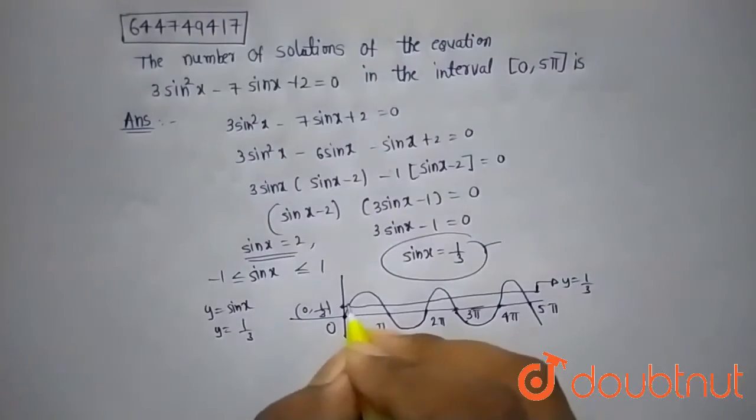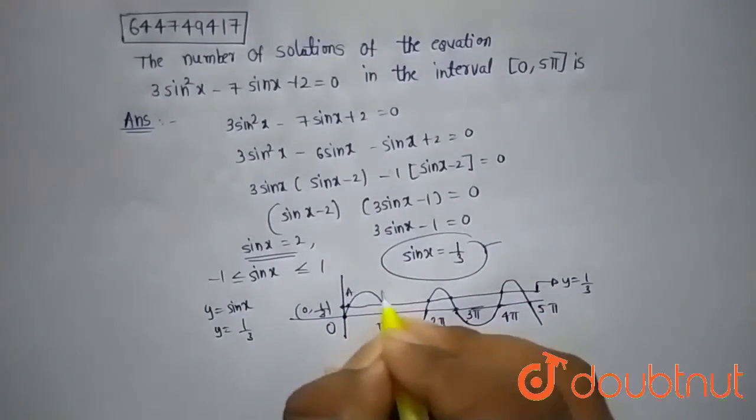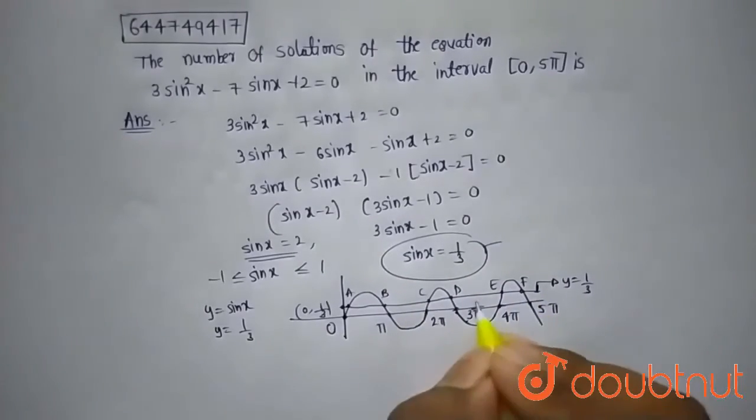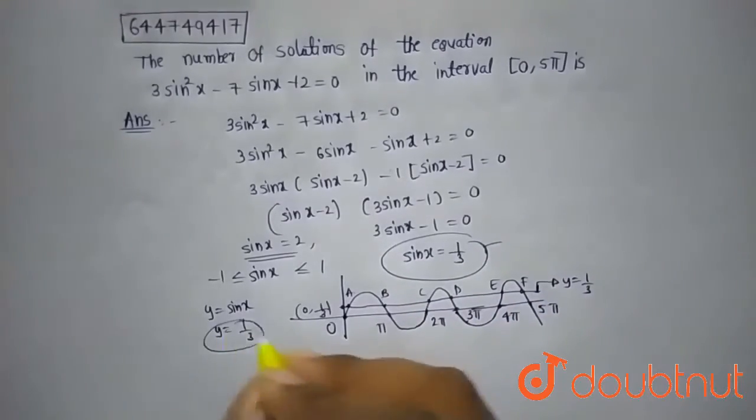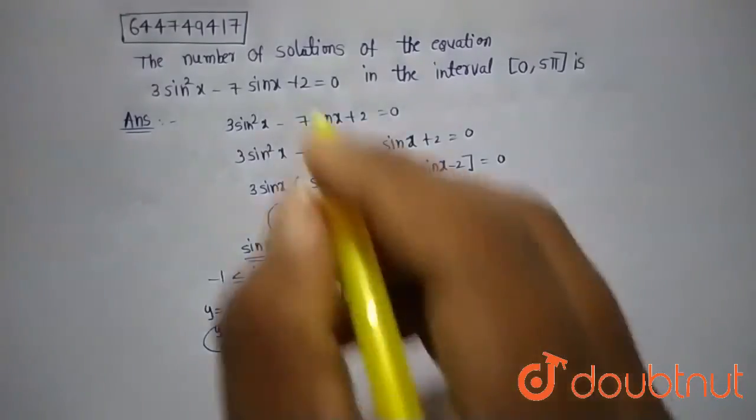they intersect at 1, 2, 3, 4, 5, 6 points. So there are six points of intersection of this curve and sin x graph. So the number of